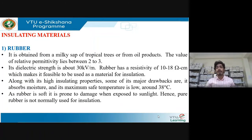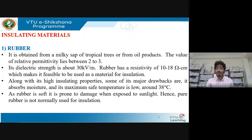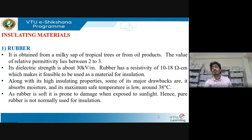Rubber was used conventionally in the beginning, but people moved on due to its drawbacks. Rubber is soft, prone to damage, not chemically stable because it absorbs moisture, and it is damaged when exposed to sunlight. Pure rubber cannot be used for insulation directly. Vulcanization — a process studied in chemistry — adds efficacy to rubber's performance, making it more capable for use as an insulating material.